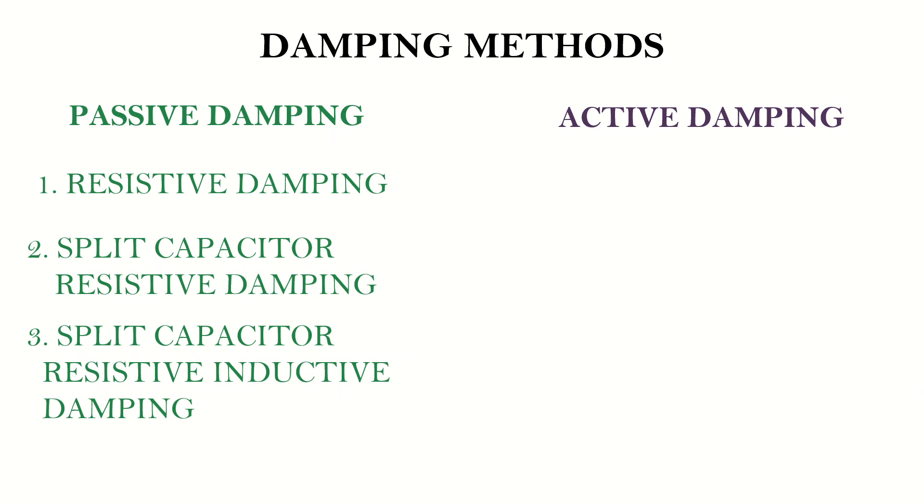However, if the switching and sampling frequencies are sufficiently high, these damping losses can be minimized. Due to the additional losses incurred by passive damping, active damping becomes a viable option for the system.